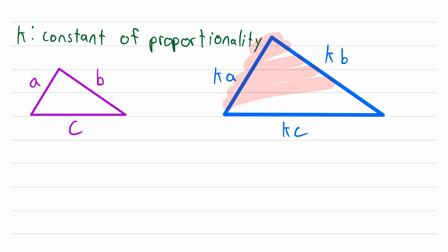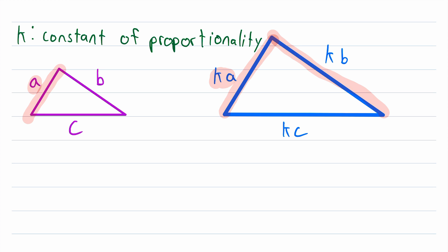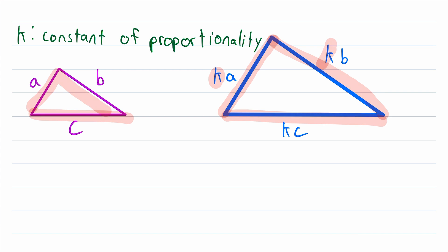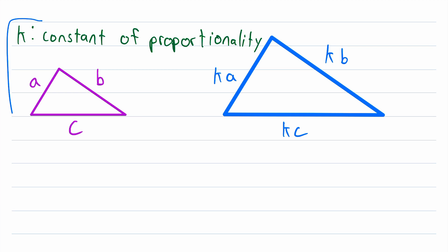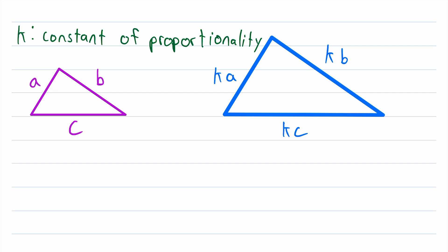When we say that the side lengths of this triangle are proportional to the corresponding sides of this triangle, that means there exists a number K called the constant of proportionality, such that the length of each side of the blue triangle is equal to K times the length of the corresponding side in the purple triangle. So the sides of the blue triangle are just the sides of the purple triangle scaled up by a factor of K. If two triangles are similar, then they have this relationship. Additionally, if you know that their corresponding side lengths are proportional, then you can conclude that they are similar triangles. That's what it means for the sides of two triangles to be proportional.